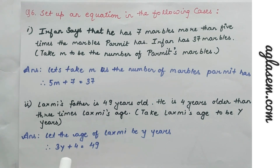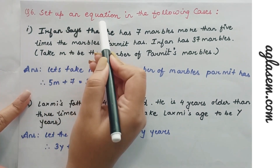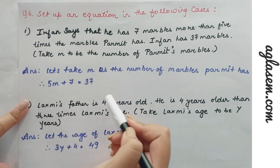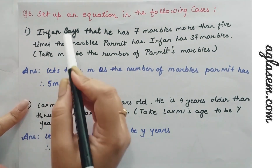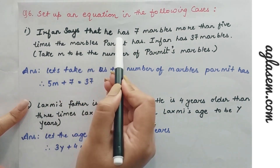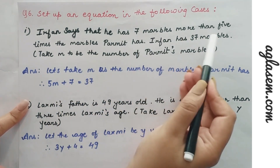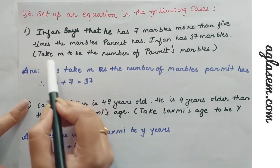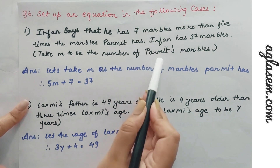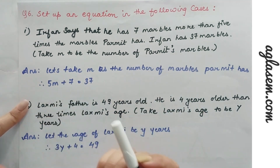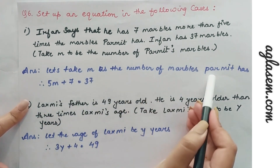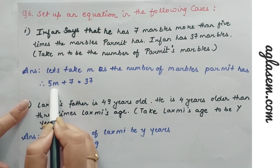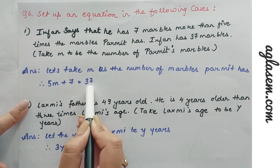Moving on to question 6: set up an equation in the following cases. The first case: Irfan says that he has 7 marbles more than 5 times the marbles Parmit has; Irfan has 37 marbles. Taking m to be the number of Parmit's marbles, the equation would be 5m + 7 = 37.